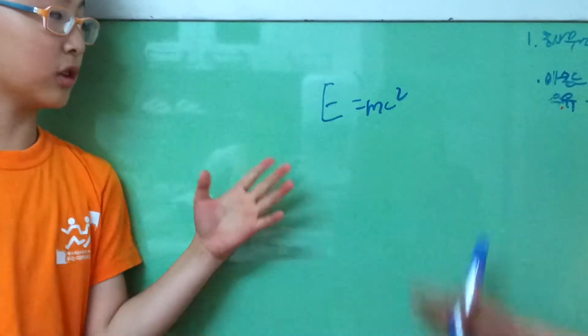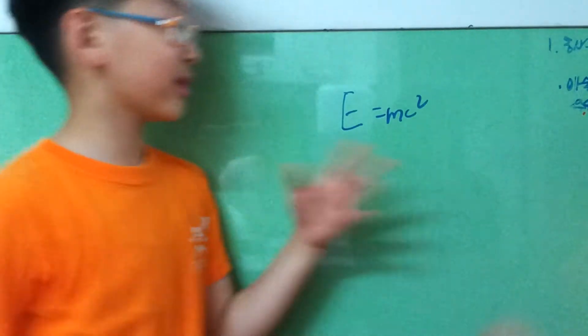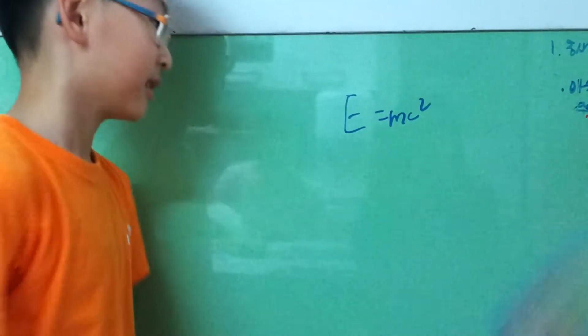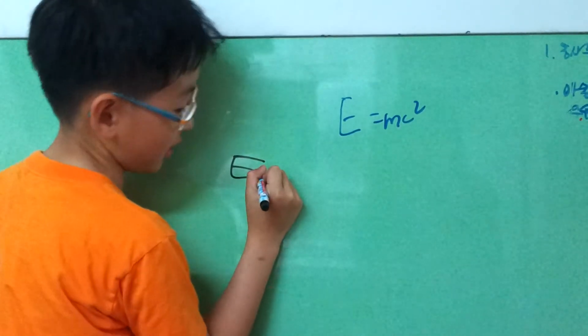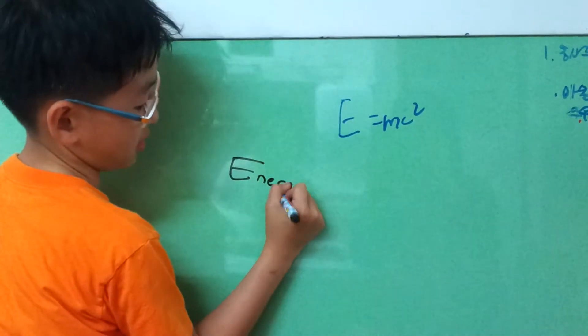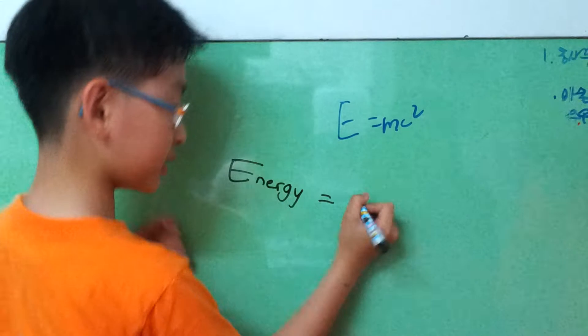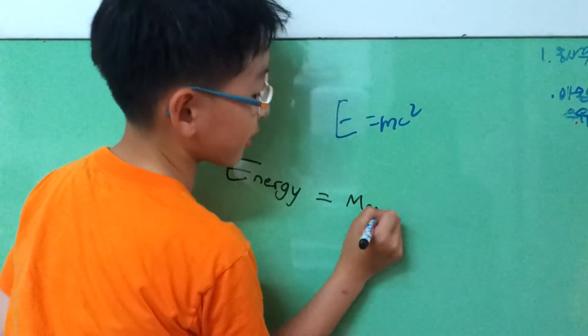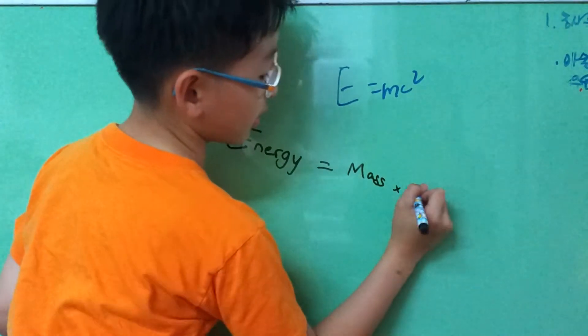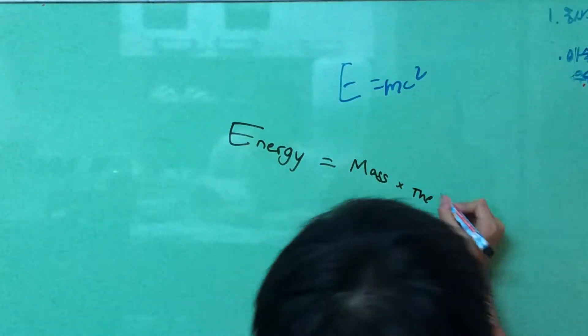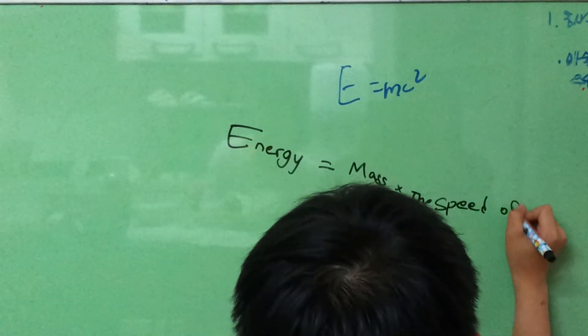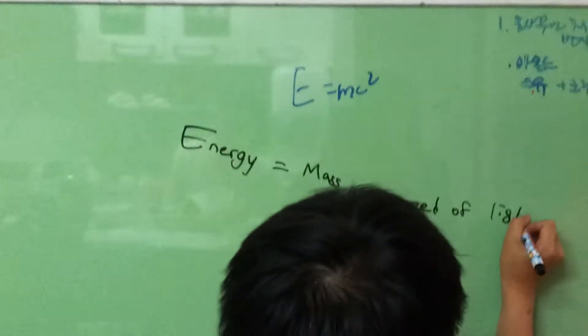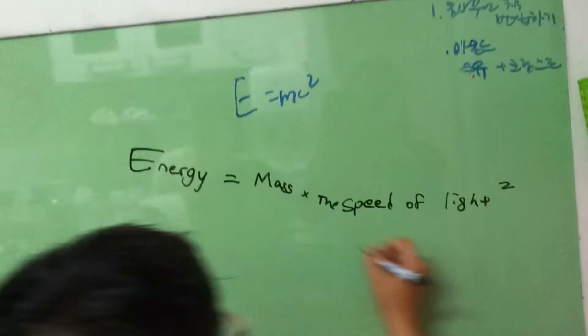E equals mc squared, which probably means that energy equals E, energy. I'm going to write it for you. Energy equals mass times the speed of light, the speed of light squared.